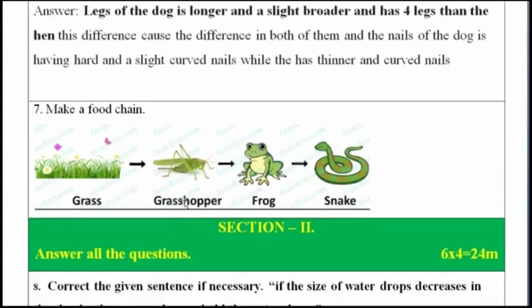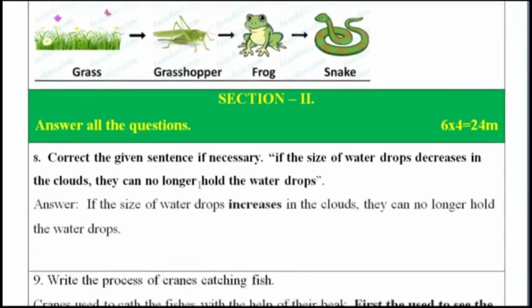Make a food chain. Snake depends on frog. Frog depends on grasshopper. Grasshopper depends on grass.